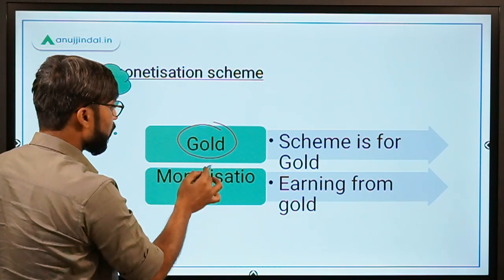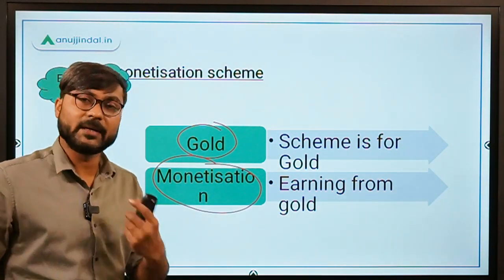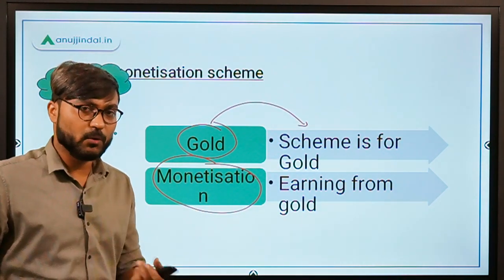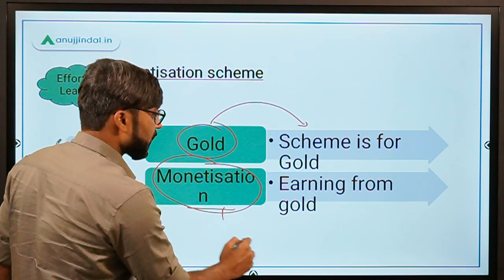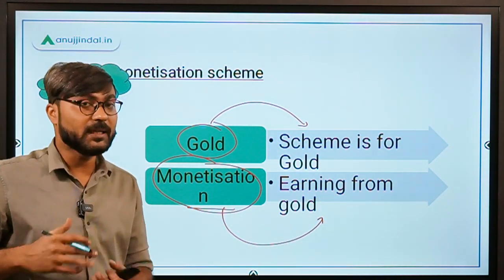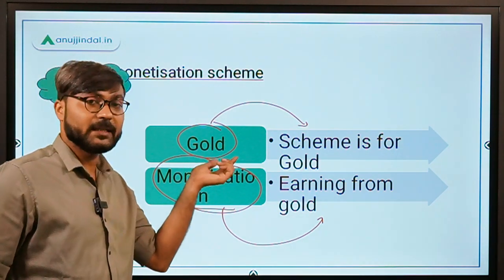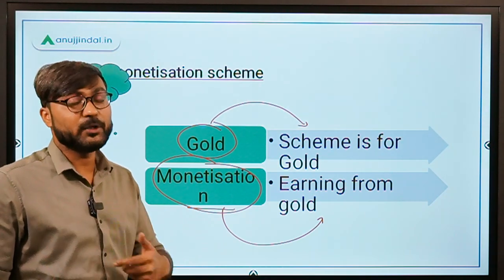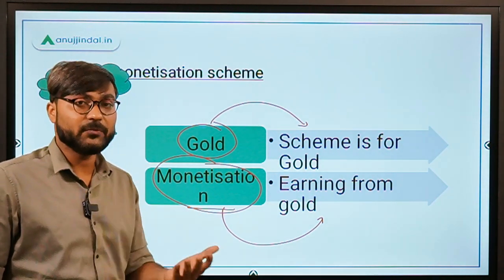So what is the name of the scheme? Gold Monetization. There are two words: gold and monetization. Gold means this scheme is all about gold. And monetization means earning from gold — earning from a certain asset. The asset here is gold. So we will use gold in such a way that we could earn something from it.